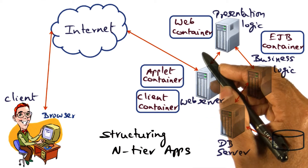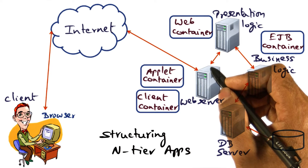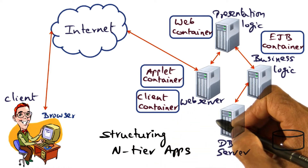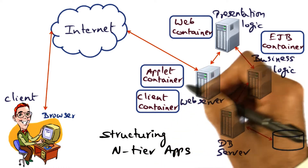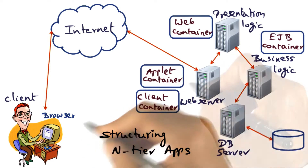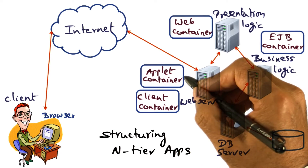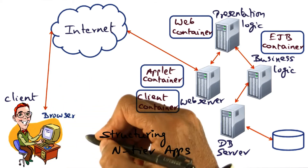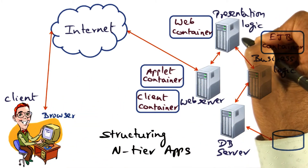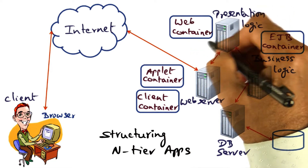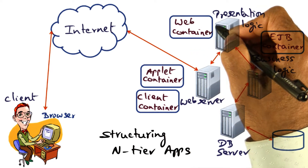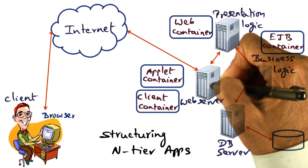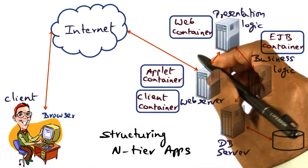Containers you can think of as protection domains implemented typically in a Java virtual machine. In the JEE version of building N-tier applications, there are four containers. There is a client container and an applet container for the client, which will reside typically on a web server. This is the one that interacts with the browser on the end client. The presentation logic is provided in a container called a web container, which is responsible for dynamically creating the pages that have to be sent by the web server back to the browser of the client.